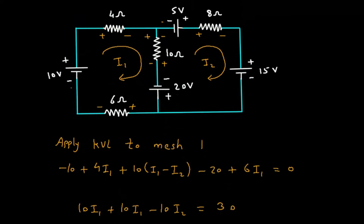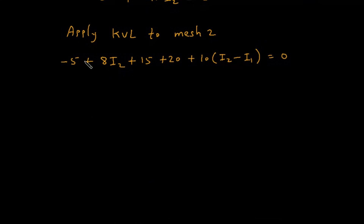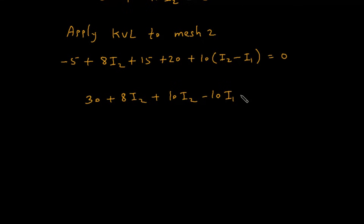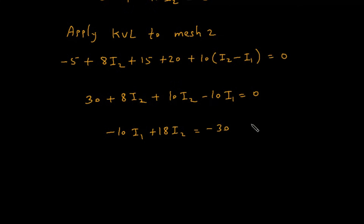Simplifying: minus 5 plus 15 is 10, plus 20 gives 30. So 30 plus 8I2 plus 10I2 minus 10I1 equals 0, which gives minus 10I1 plus 18I2 equals minus 30. Let us assume this is equation number 2.